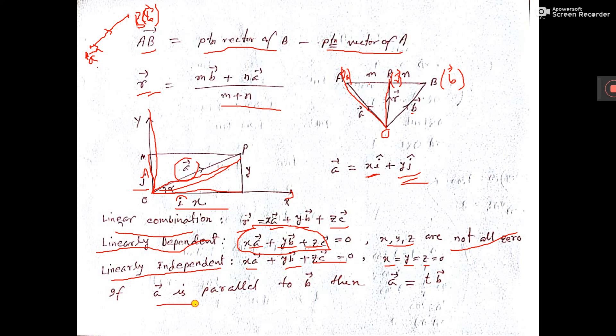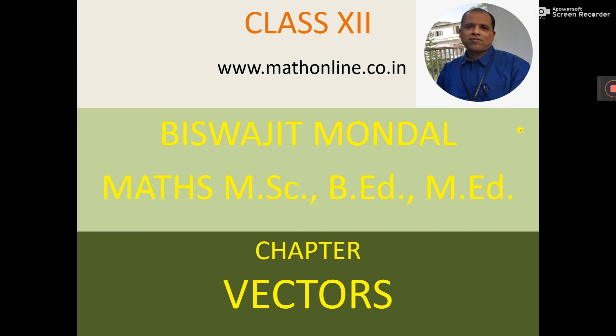If a is parallel to b, then we can write a is equal to t b. That is, one scalar into b. All these results will be required when we will solve sums.